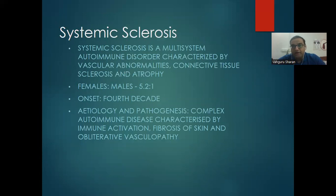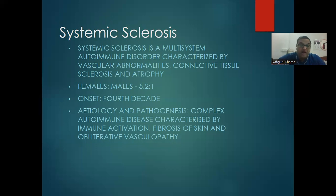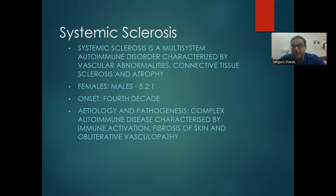Morphea was a localized variant. When morphea-like lesions involve the whole body and internal systems, it is called systemic sclerosis — a multisystem autoimmune disorder characterized by vascular abnormalities, connective tissue sclerosis, and atrophy. Female to male ratio is 5.2:1. Onset is in the fourth decade. It is characterized by immune activation leading to fibrosis of skin and obliterative or necrotic small vessel disease.